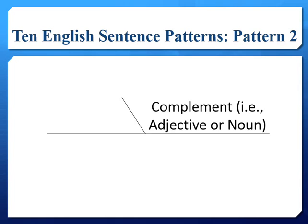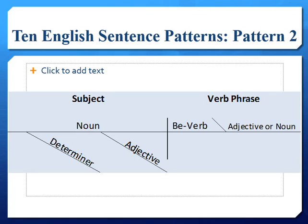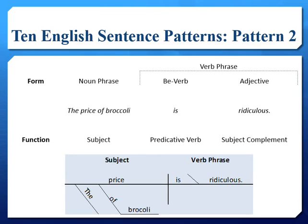A complement can be an adjective or noun that describes another noun, whether the modified noun is a subject or object. When talking about sentence pattern two, we will refer to the complement modifying the subject. In the diagram, an adjective or noun will follow a slanted line after the be verb to show that it modifies the noun as the subject. The adjective 'ridiculous' describes the noun 'price' because the subject complement 'ridiculous' is describing the subject 'the price of broccoli' as being ridiculous or priced unreasonably.